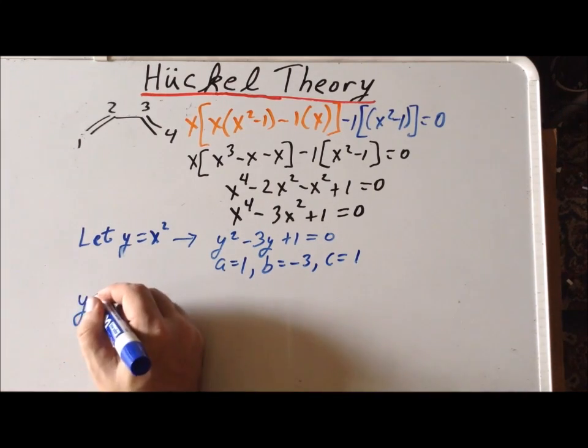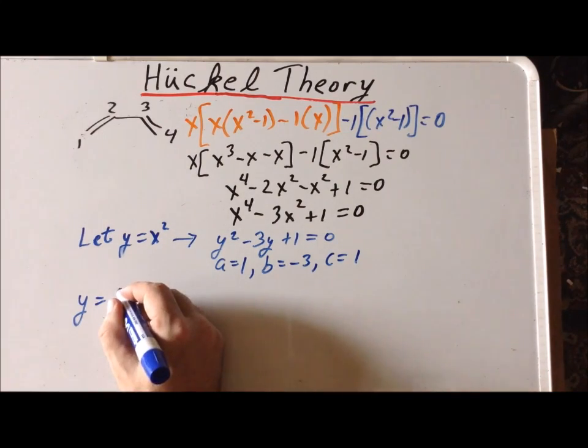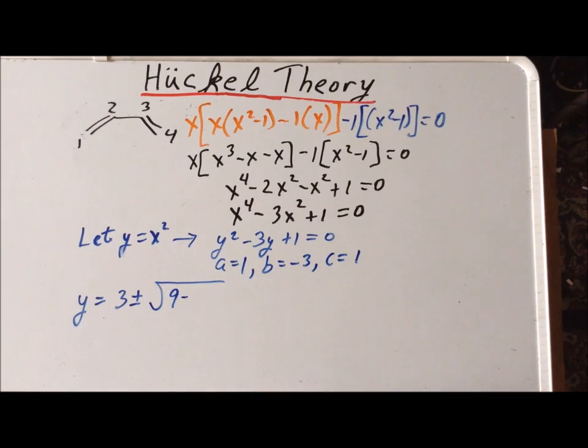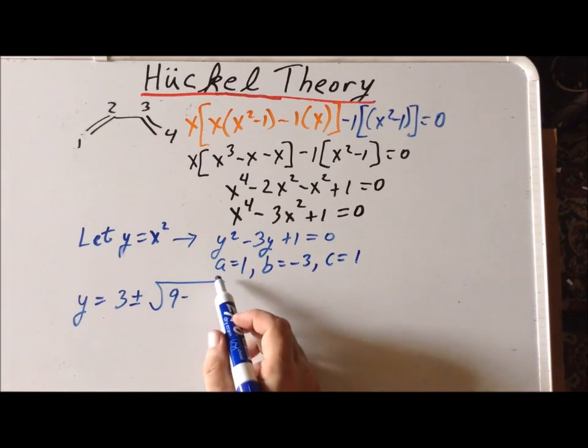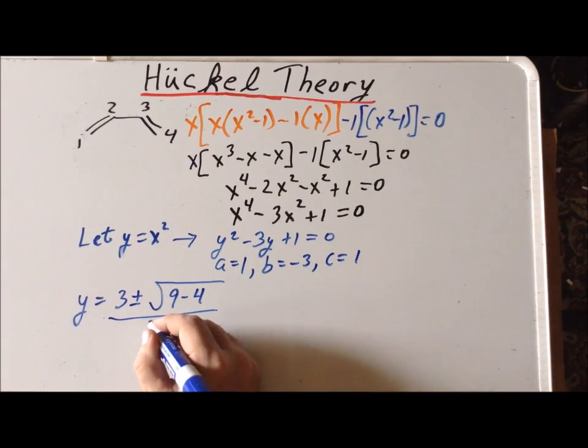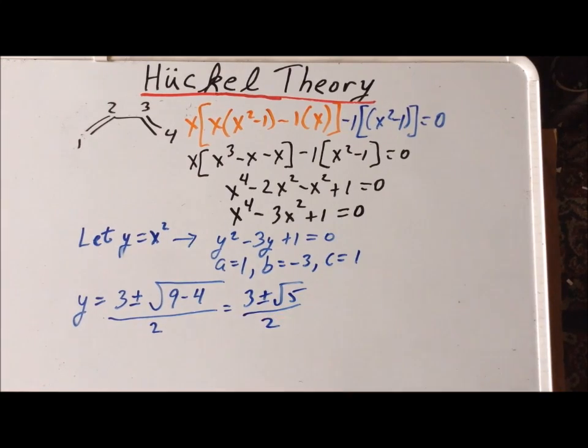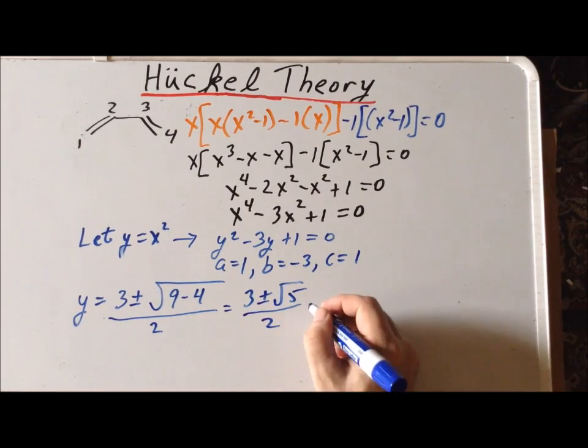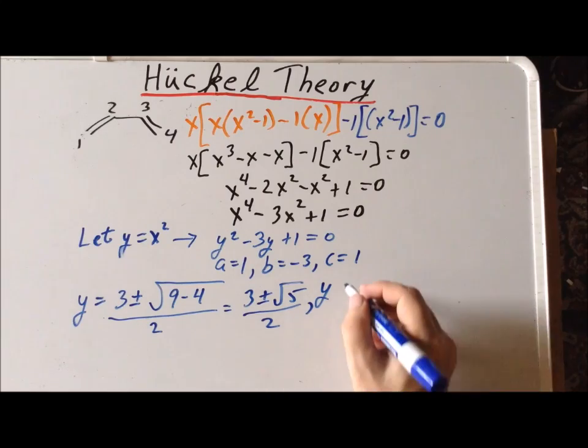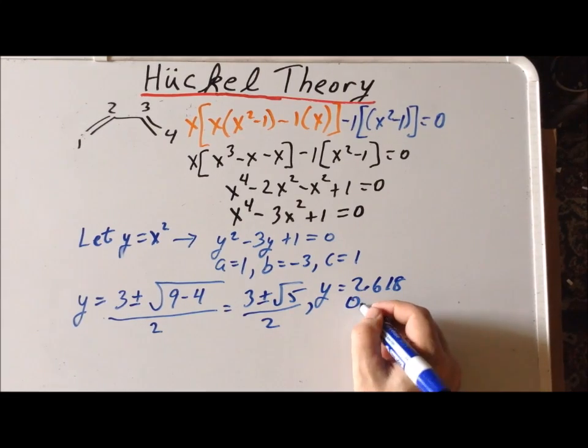So, therefore, the roots of this equation, we have negative b, so minus minus 3 is positive 3, plus or minus the square root of b squared, so that gives us 9, minus 4ac, a is 1, c is 1, minus 4, divided by 2 times a, which is 2. So, this gives us 3 plus or minus the square root of 5, divided by 2. And if we evaluate this in terms of numerics, we get that y is equal to 2.618 or 0.382.